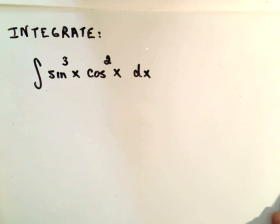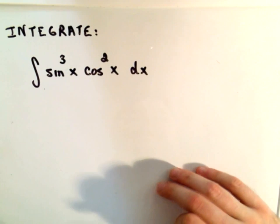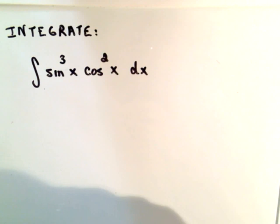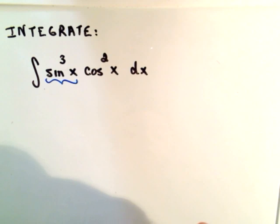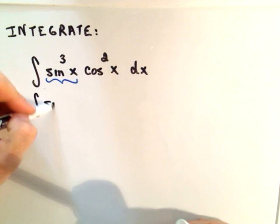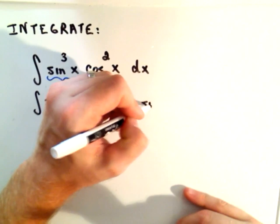So I always remember the old saying, at least I always heard it was the odd man out, you're the odd man out. And in this problem, notice we have an odd power of sine. So what I'm going to do is I'm going to bust up my sine as sine squared, and then I keep a sine factor.